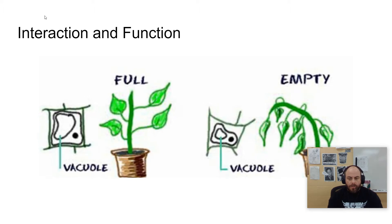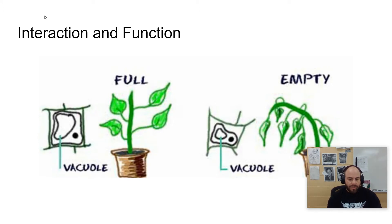The first thing we're going to look at are vacuoles. Vacuoles have a storage and release function. In plants, they are particularly there to store water. Plants will have a large central vacuole seen in their cells, as you can see from the picture here. They can also be used to release waste. Plants will retain water for something called turgor pressure.